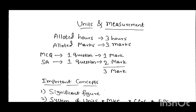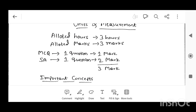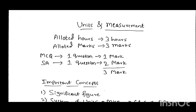Hi everyone, today I am going to discuss the important concepts on the chapter Units and Measurement, and one more chapter: Motion in a Straight Line. First, I am going to discuss Units and Measurement. In this chapter, the total allotted hours is three hours and total allotted marks is three marks. You may get one MCQ question which carries one mark, and one essay — that is, short answer type — question which carries two marks.